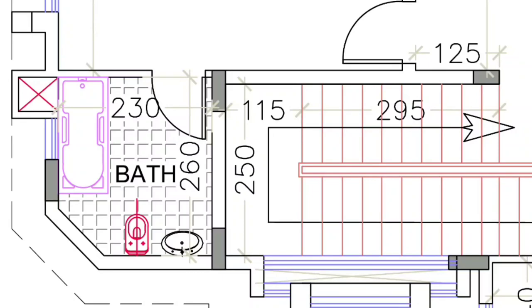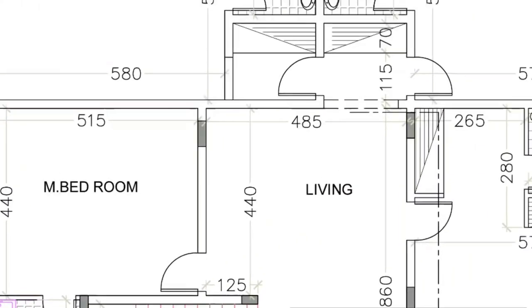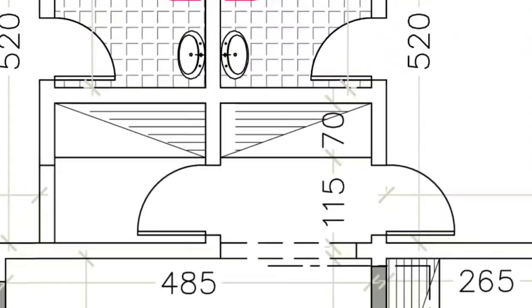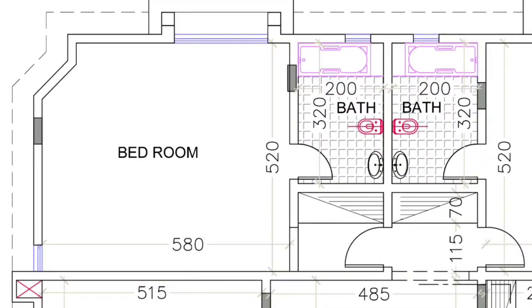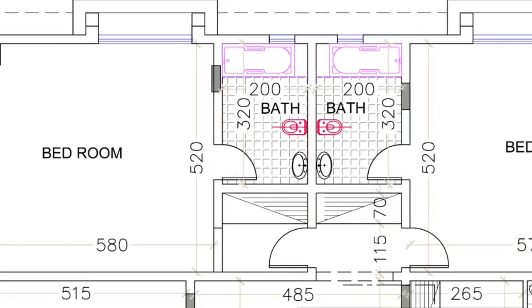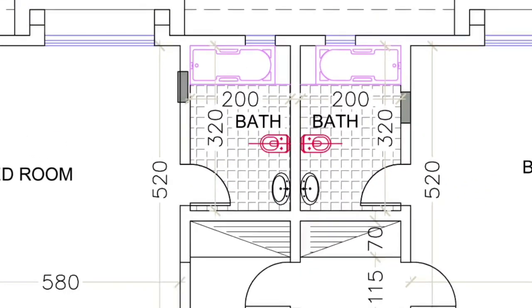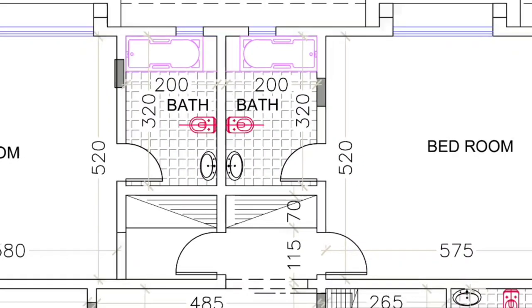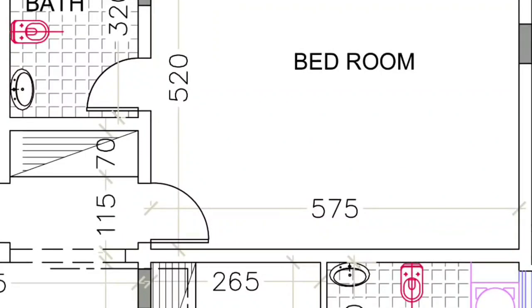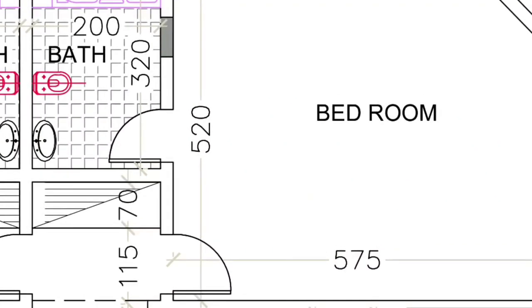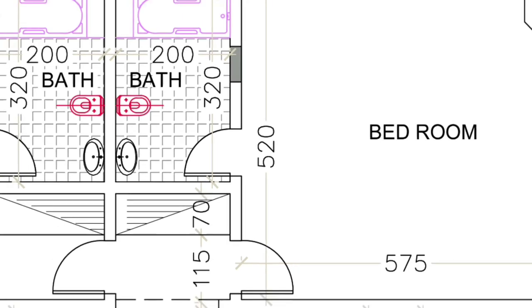The master bedroom's attached bathroom is 230 by 260. Then on this side we have another bedroom — the entrance is here, and the room is 580 by 520 with an attached bathroom. The dress area, cupboard area, and wardrobe area are 320 by 200 cm, with shower, water closet, and sink all arranged properly. Then again on this side there is a bedroom 575 by 520 with attached bathroom 320 by 200 cm.